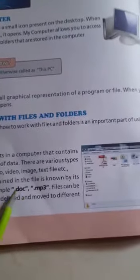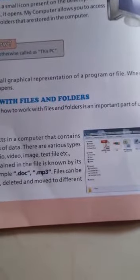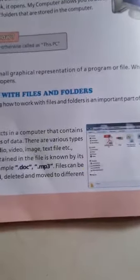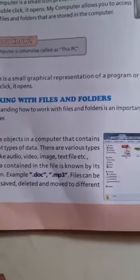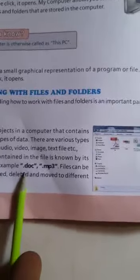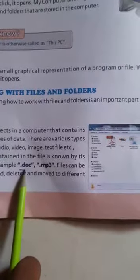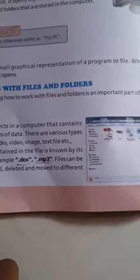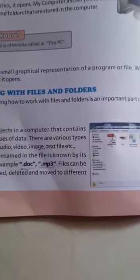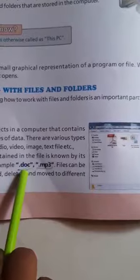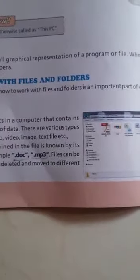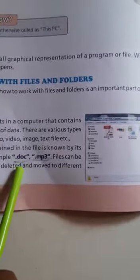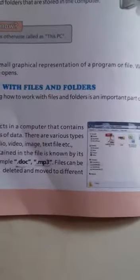The data contained in the file is known by its extension. Each and every file has an extension. When we give the file name, after finishing we add dot doc or dot mp3. Files which don't have an extension cannot be opened. Files can be opened, saved, deleted, and moved to different folders when the extension is in the file name.